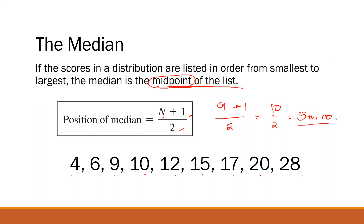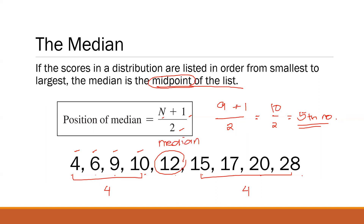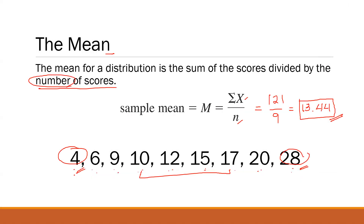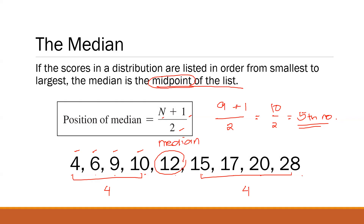We can count from left to right to find the fifth number. So we have 1, 2, 3, 4, 5 — our median is 12. If you look at it, there are four numbers before 12 and four numbers after 12, making it the middlemost value. So 12 is our median. Our mean earlier was 13.44, and this time the median is 12. That's another way to describe a distribution — to look for its middlemost value.